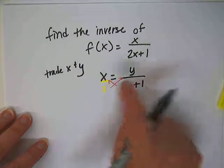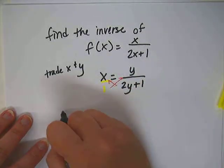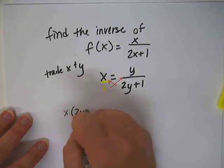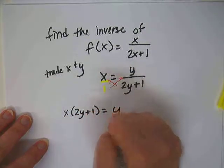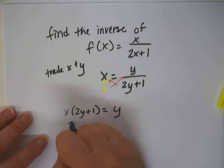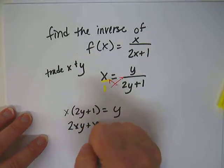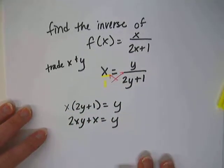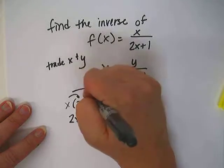When you cross multiply, you do top and bottom of one set, top and bottom of the other set, and set them equal to each other. So this will be x(2y + 1) = y. Then we get 2xy + x = y, because I distributed this.